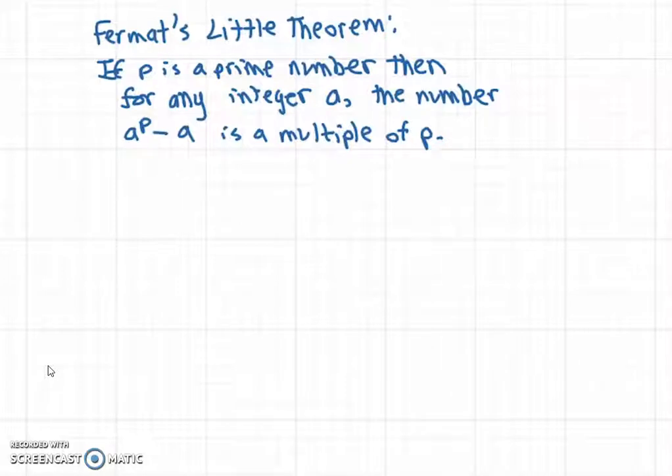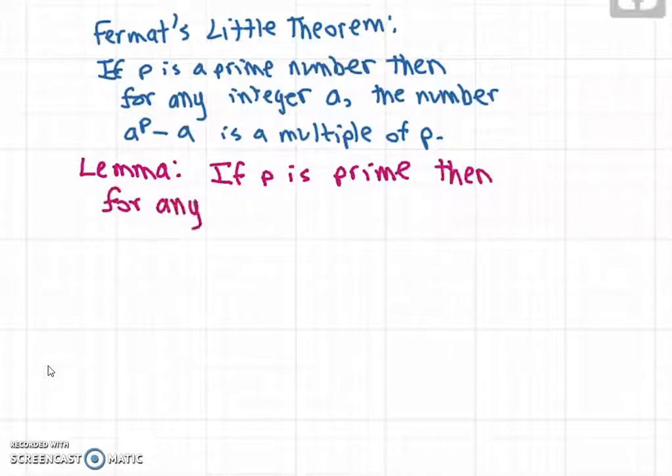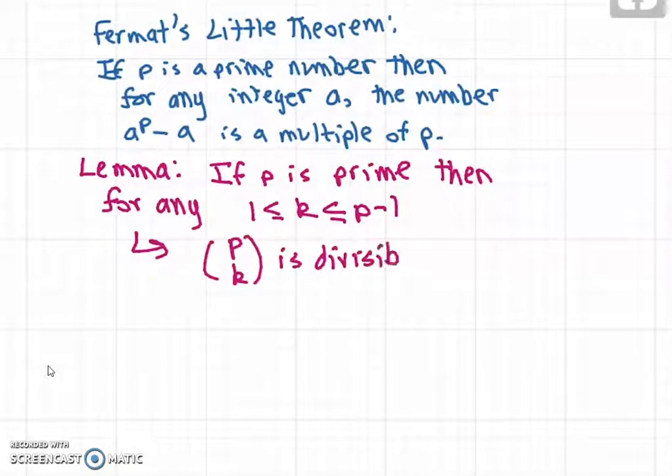Before I go into the proof of this theorem, I'll first prove the following lemma. The lemma says if p is prime, then for any integer k between 1 and p minus 1, the binomial coefficient p choose k is divisible by p.